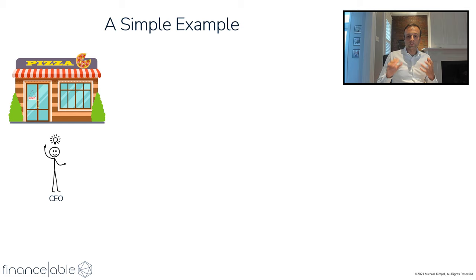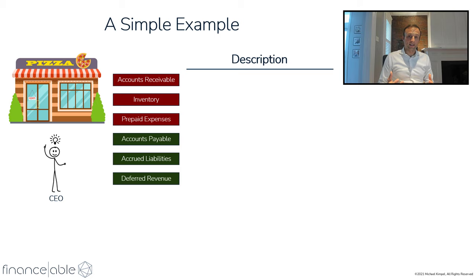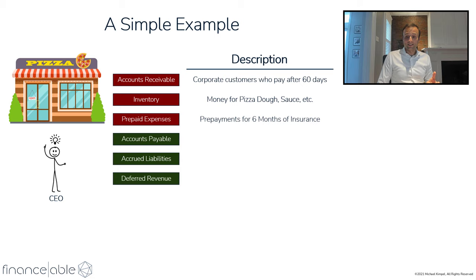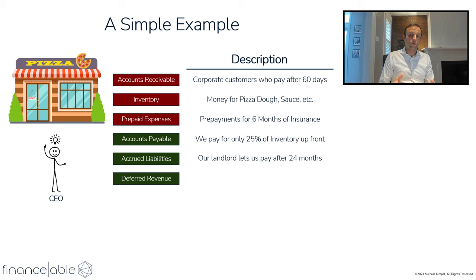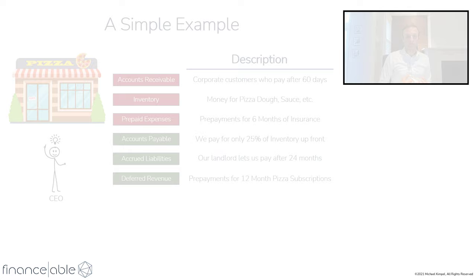It's a very similar example to what we saw in the last video. We have a pizza shop and we have working capital accounts to work through. Our accounts receivable are from corporate customers who pay on a 60-day basis, so they haven't paid for the sales we've made up front. The inventory is just our pizza dough and sauces. Prepaid expenses are prepayments for insurance for six months. On the liability side, things are a little bit different now: our suppliers say we only have to pay 25% of our inventory up front instead of 50%. Our landlord is letting us pay rent after 24 months instead of 12. And for pizza subscriptions, we're selling 12 months of subscriptions instead of six months, getting more cash in from customers.